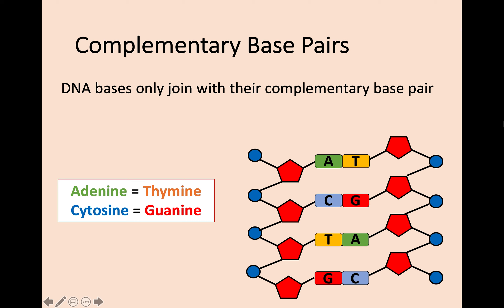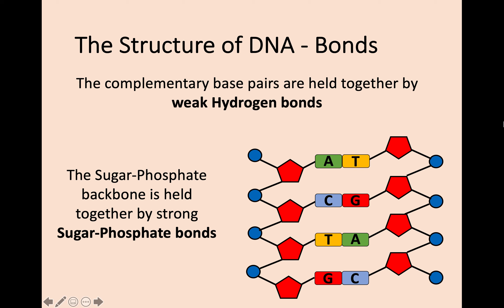From National 5 Biology we remember these bases: A, T, C, and G—adenine and thymine, cytosine and guanine. They only join with each other and can't be mixed up. What we want to go into more detail about is what joins those bases together. The complementary base pairs are held together by hydrogen bonds, but they're weak hydrogen bonds. They can be broken quite easily, and we're going to look at why that is more important later on in Key Area 2.